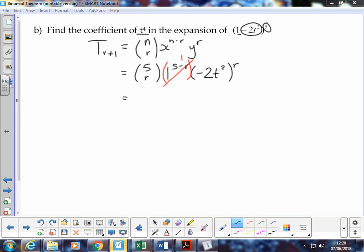So what we've got, we're simplifying it by saying 5 choose r. We're going to break up that bracket term, negative 2t squared, into negative 2 to the power r, and t squared to the power r.